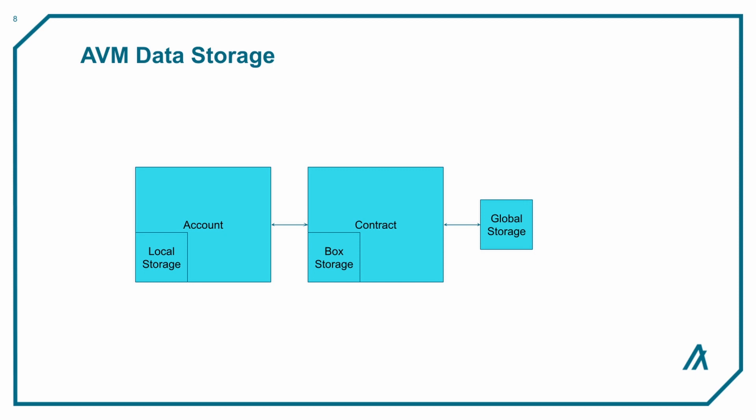Global and local storage are 128-byte key-value pairs that are limited to 64 per contract for global storage, or 16 per opt-in account for local storage. Box storage offers an unlimited number of named storage segments in a contract, up to 32 kilobytes each. Global and local storage can be read by anyone on-chain, but box storage can only be accessed by the app it belongs to.